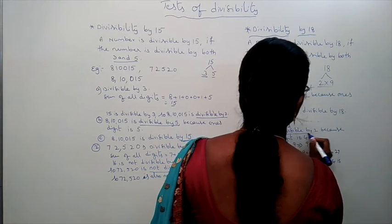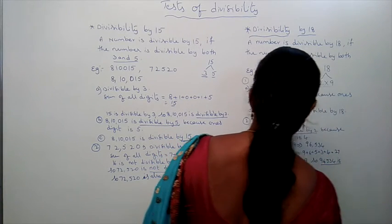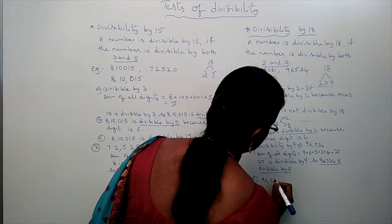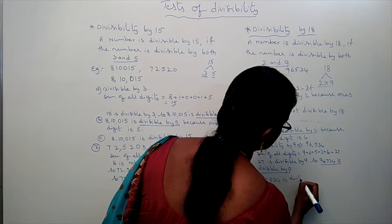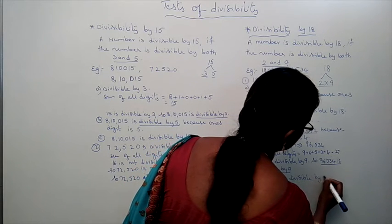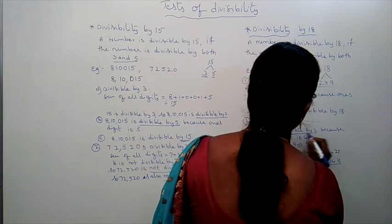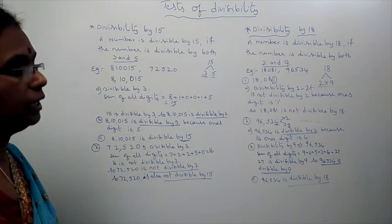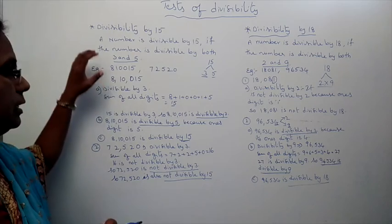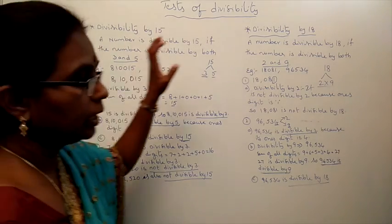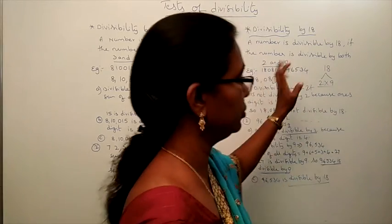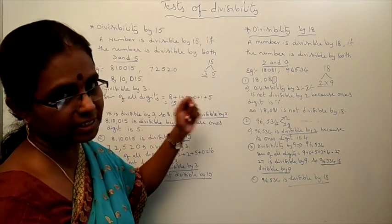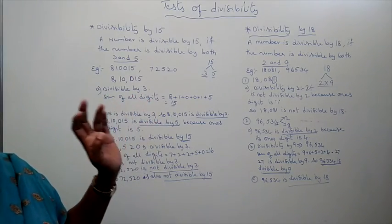Since 96,534 is divisible by 2 as well as divisible by 9, it is divisible by 18. What is the rule of 15? If the number is divisible by both 5 and 3, then the number is divisible by 15. When a number is divisible by 2 and 9, then it is divisible by 18. The rule of 3 and 9 use sum of digits; for 5 and 2, we check the ones digit. This is the divisibility test of 15 and 18.